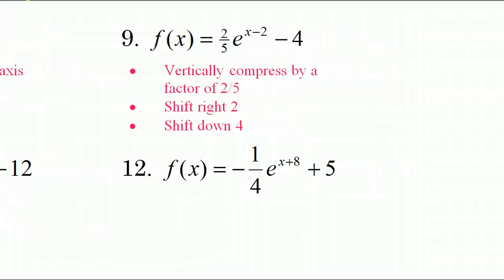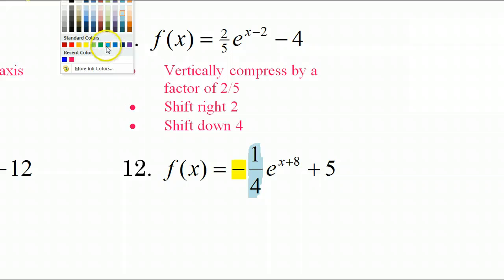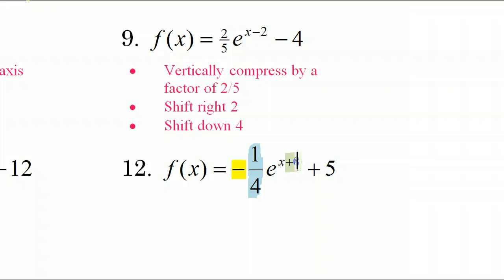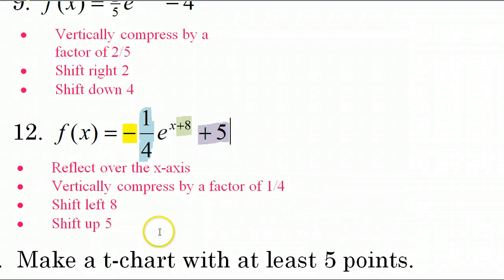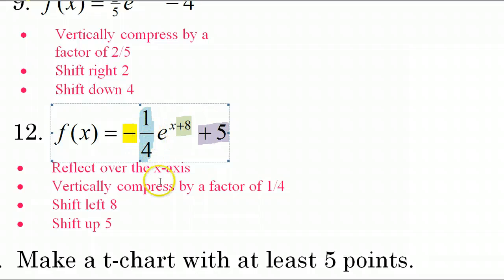Number 12 — there are four transformations happening here. There's this negative sign, which is going to be a reflection over the x-axis. There is the one-fourth, which is going to be a vertical compression by a factor of 4. There is the plus 8, which is a shift left 8. And then there is the plus 5, which is a shift up 5. So please be aware there are four transformations that you must list. It's vertically compressed because this a value is less than 1 — if this had been bigger than 1, it would have been a stretch.